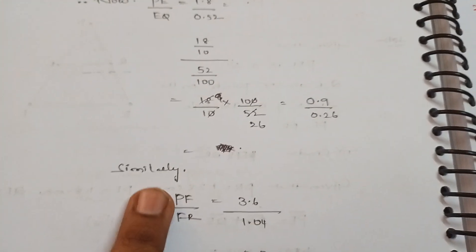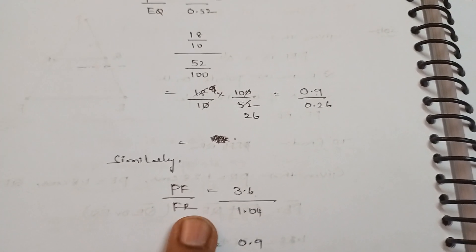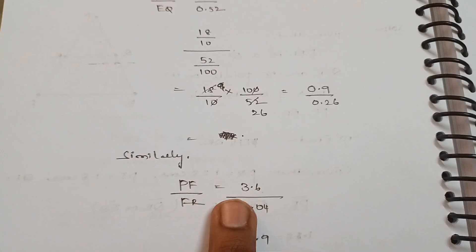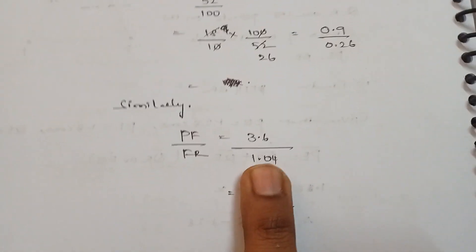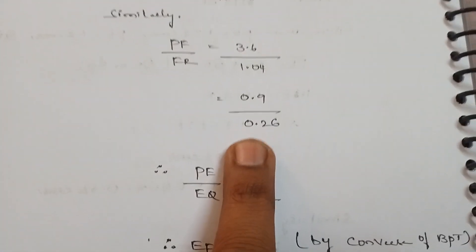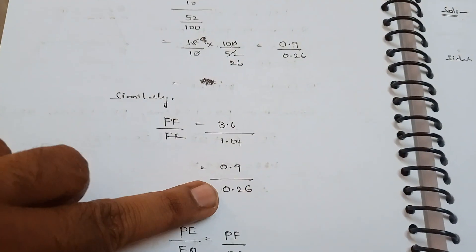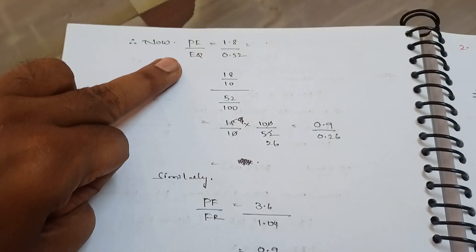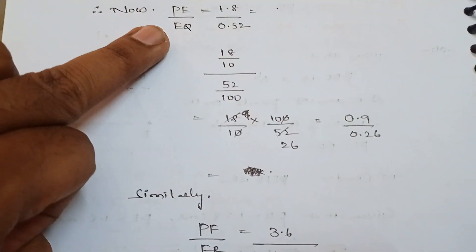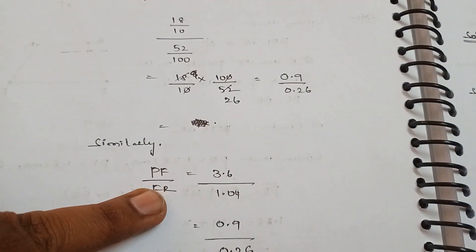Similarly, PF by FR - PR can be recognized as PF by FR - that equal to 3.6 by 1.04. We get, after simplifying, 0.9 by 0.26. So we got same values, right? PE by EQ value and PF by FR value we got as the same.